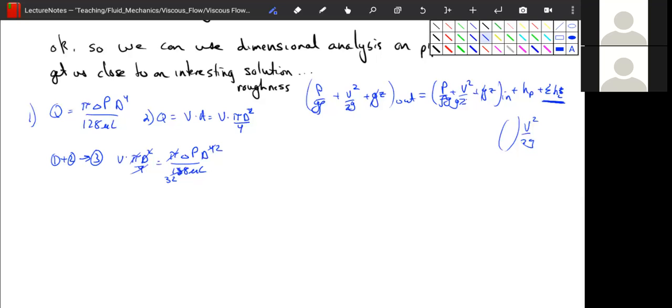And remember, we're shooting for something that looks like this, right? We have a delta p here. So let's start rearranging this and figuring out what we can do.